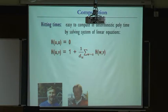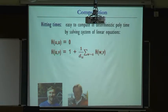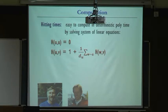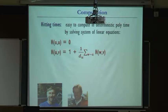Hitting times are easy to compute: H(u,v) is the expected hitting time. From any two distinct vertices u and v, if I want to hit v from u, I first have to take at least one step, then average over the neighbors w the hitting time from w to v. You get this identity by conditioning on the first step. These are linear equations in the H(u,v) quantities — a regular system — so hitting times are the unique solution, computable in less than N cubed operations, often much less because it's a sparse system.